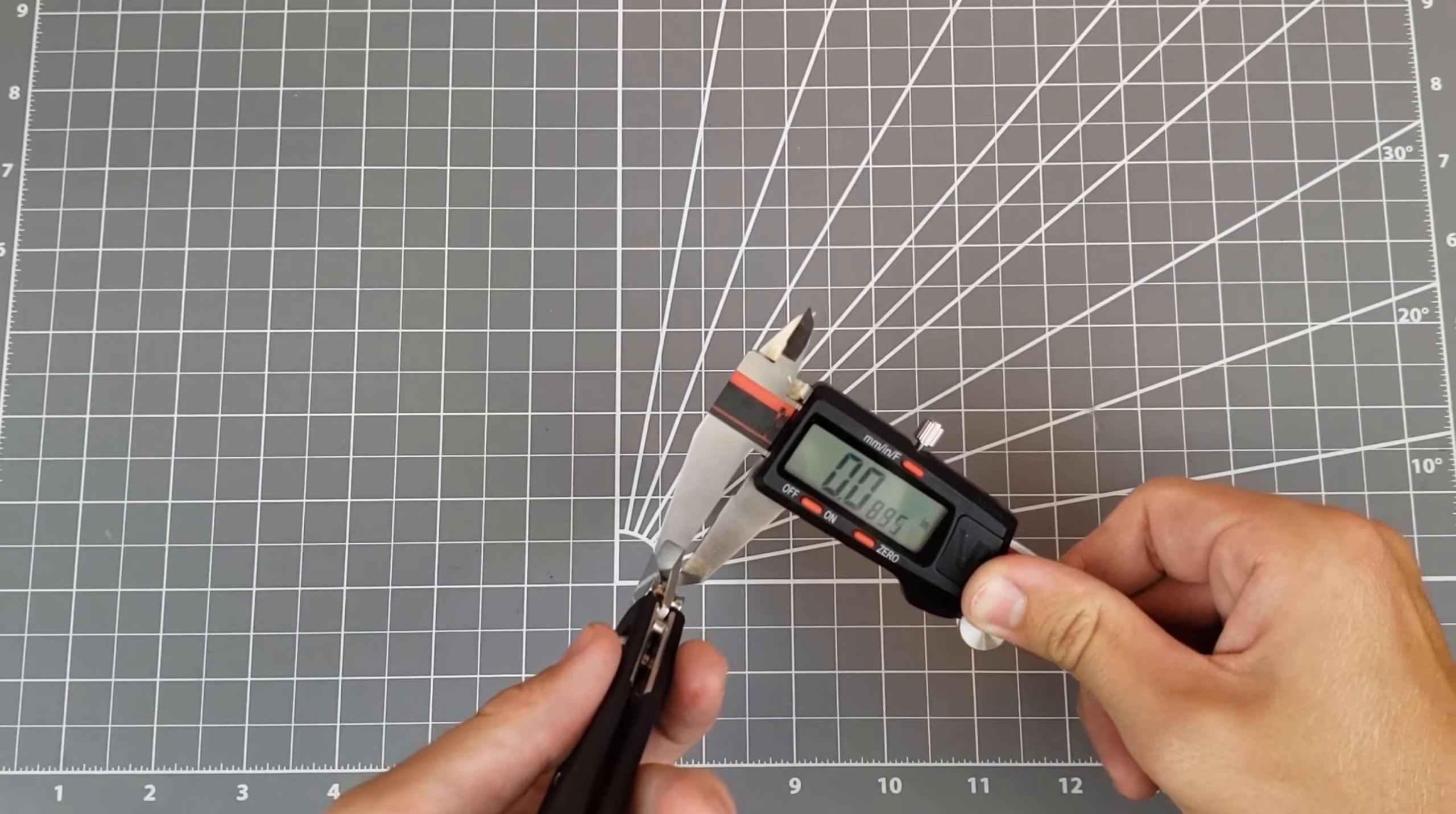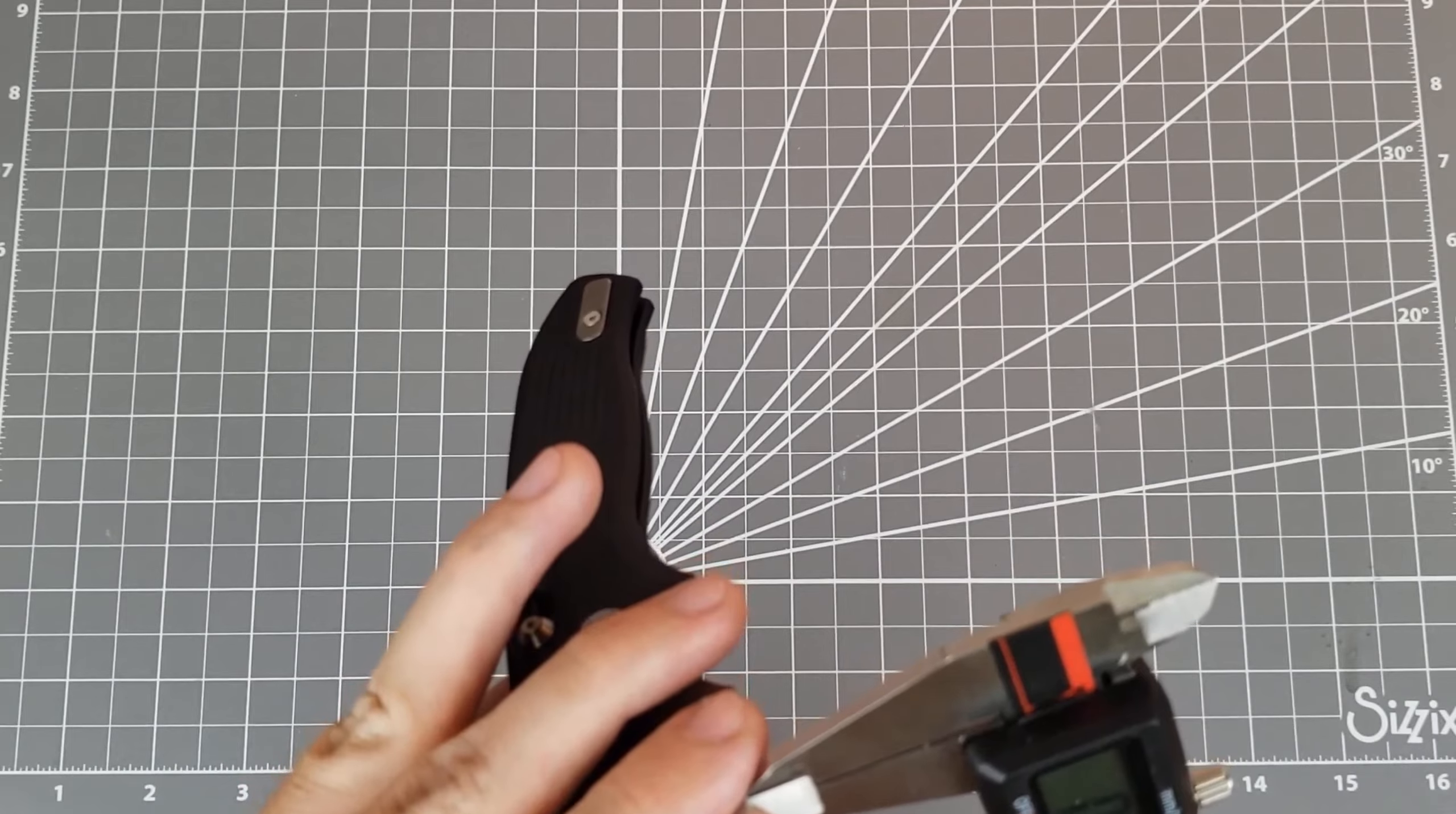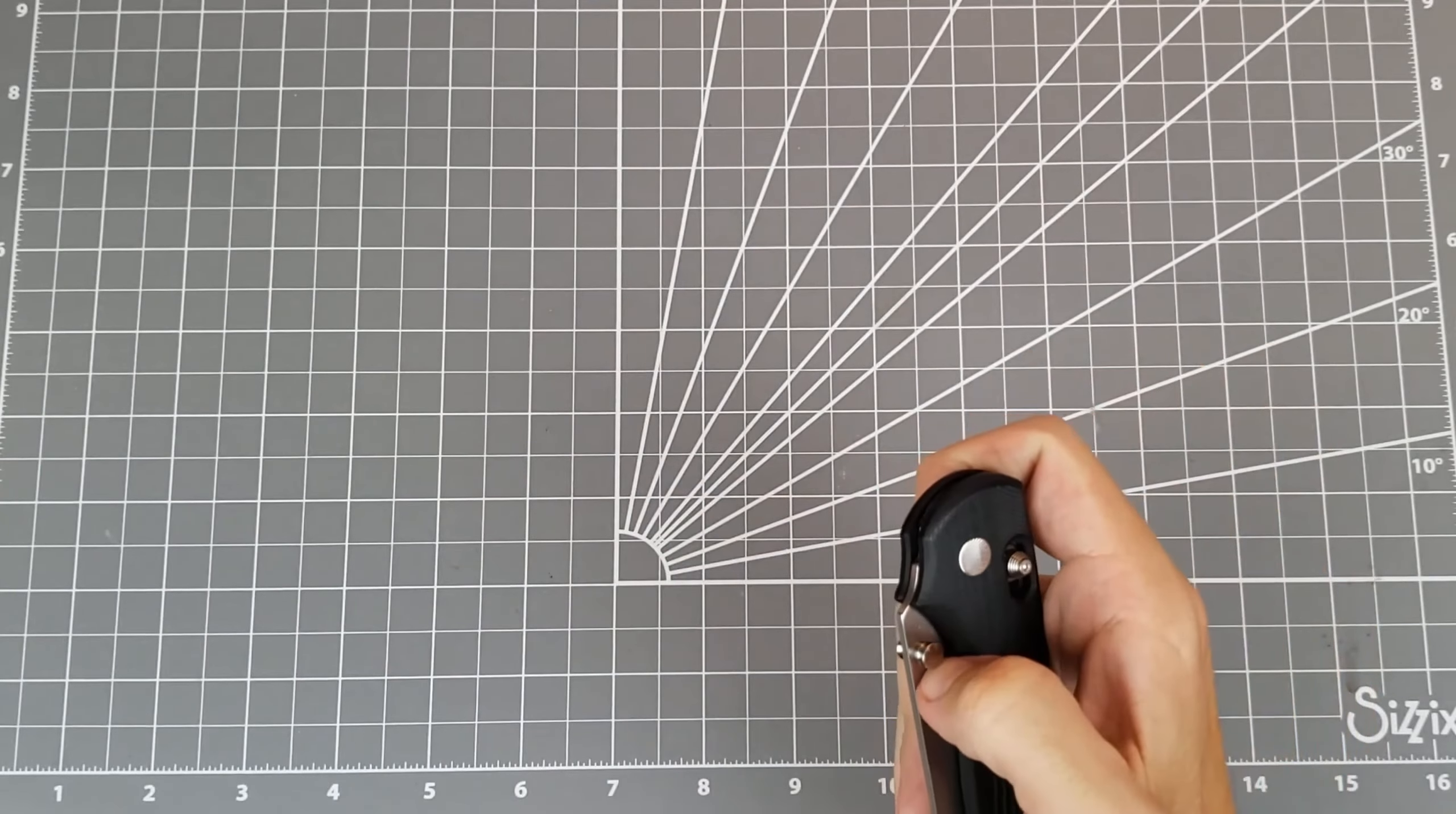Blade stock thickness, looking at 0.08, very thin, definitely on the thin side. And behind the edge, looking at about 23 thousandths. Weight on this, if I remember, I'll put it up there somewhere. I think it's like three, probably three and a half ounces, if I had to guess.